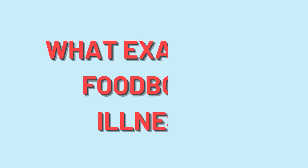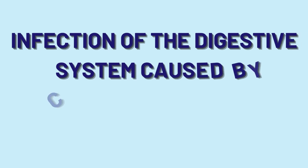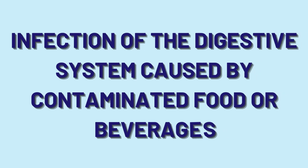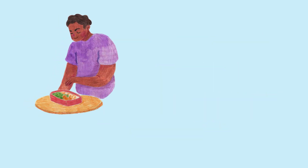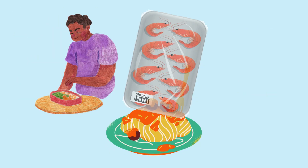To start, what exactly is foodborne illness? Put simply, it's an infection or irritation of the digestive system caused by consuming contaminated food or beverages. These can be home-cooked meals, restaurant dishes, or even packaged goods.